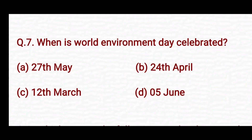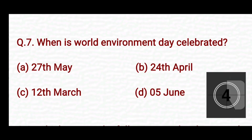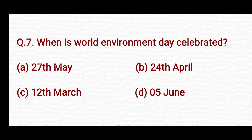When is World Environment Day celebrated? Option A: 27th May. Option B: 24th May. Option C: 12th March. Option D: 5th June. The right answer is Option D — 5th June.